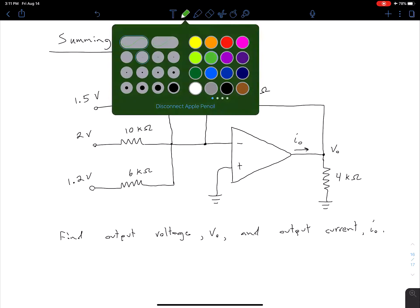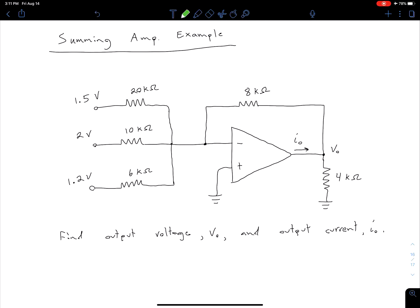What we can do that might be useful is we can come in here and say this 20 kΩ resistor is in the same place of R1, 10 kΩ is where R2 was, 6 kΩ was R3, 8 kΩ is R_F, and then we also have these three voltage sources which correspond to V1, V2, and V3 in our equation. Sometimes just writing that out explicitly can make it easier to see where to substitute in the various values.